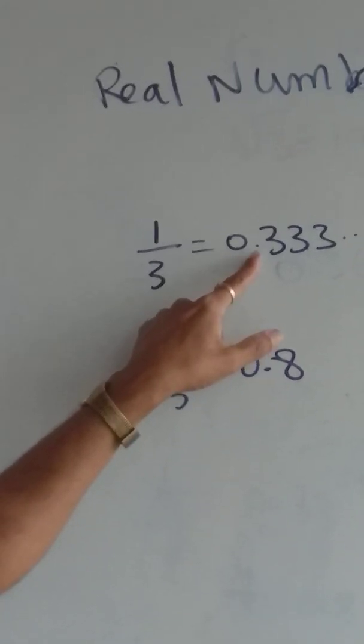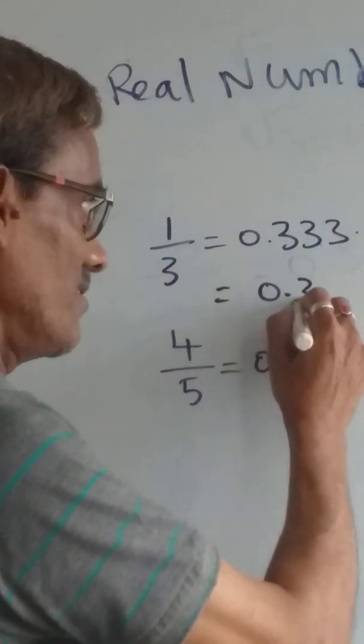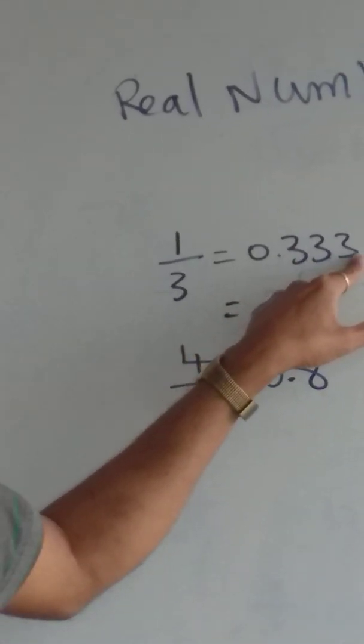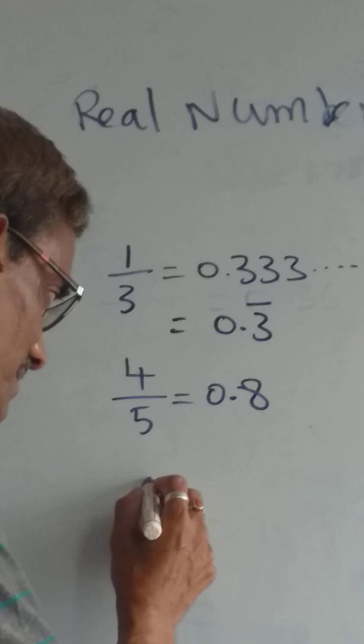But in these cases, we are getting 0.333... So this I can write as 0.3 bar. That means that number keeps on recurring, the same number only recurring.